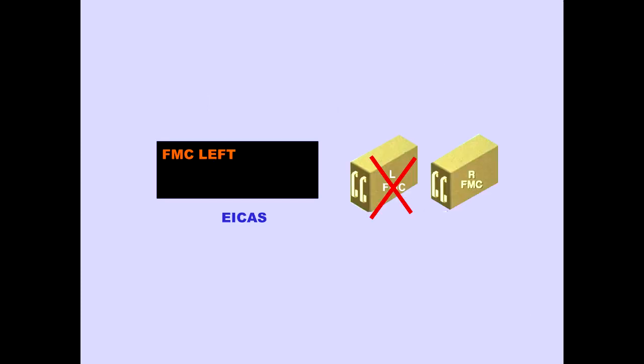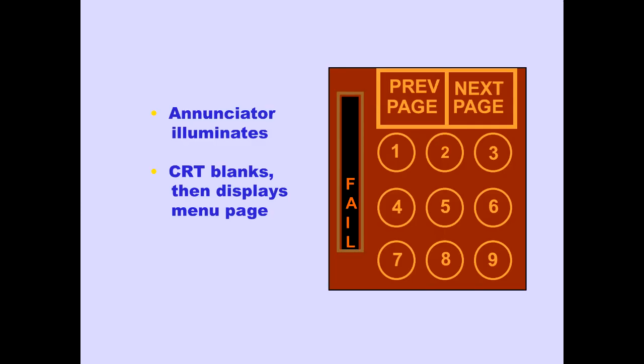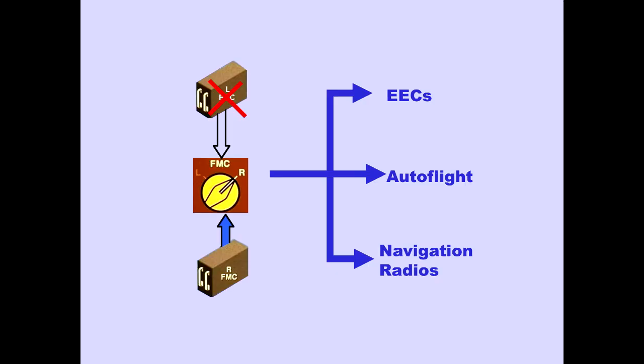The ICAS advisory message 'FMC' is displayed when the FMC has failed. When the selected FMC fails, the auto-throttle disconnects and LNAV and VNAV are inoperative. The FMS-CDU enunciator fail illuminates, and the FMS-CDU CRT displays the menu page when its respective FMC fails. Rotating the FMC master switch to the operative FMC provides valid information.